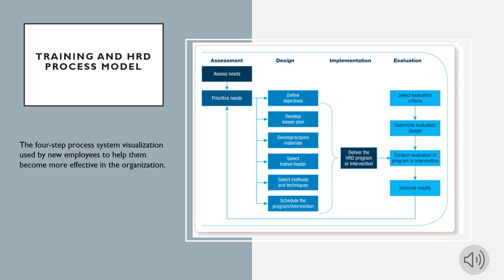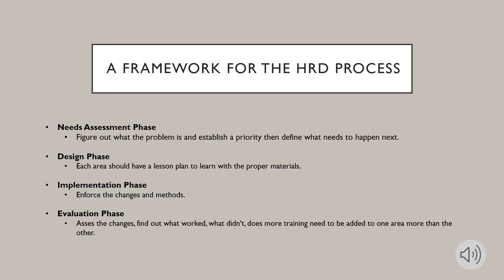The Training and HRD Process Model is a four-step process system used to help new employees become more effective in the organization. Following this system theory helps address a wide range of issues and problems within an organization and helps individuals and groups achieve their goals. The framework begins with the Needs Assessment Phase: figure out what the problem is, establish a priority, then define what needs to happen next. This should be used to help fill the gaps within an organization, from poor employee performance to new challenges that may need to change the way an organization operates.